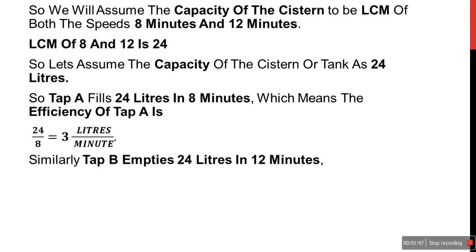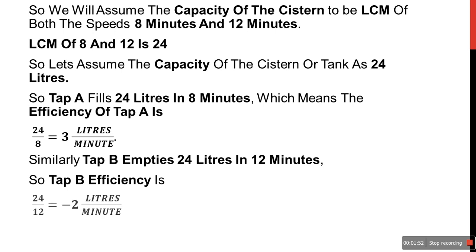Similarly, tap B empties 24 liters in 12 minutes. So tap B's efficiency is 24 divided by 12, which is 2 liters per minute. But tap B is emptying the tank, so it will be negative work — minus 2 liters per minute.